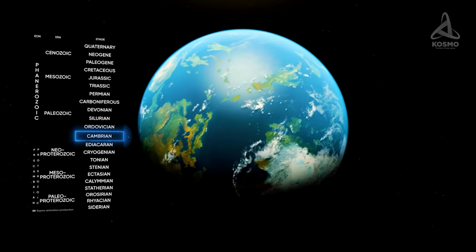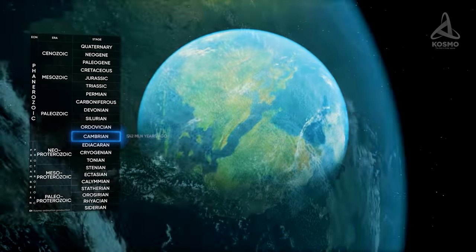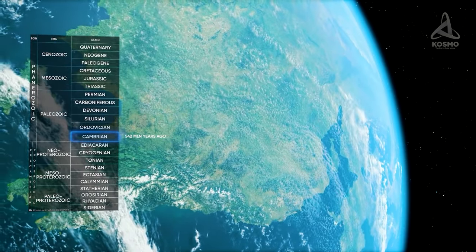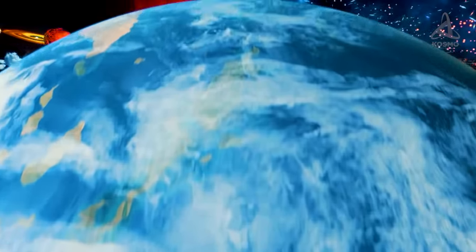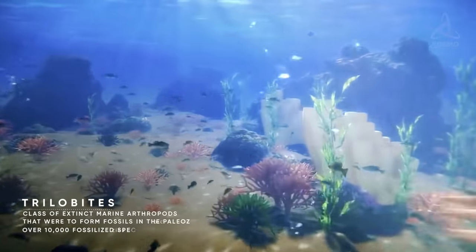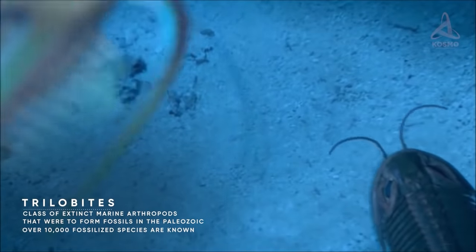The first period of the Phanerozoic Eon is called Cambrian. It started 542 million years ago and continued for about 56 million years. Trilobites are the most well known and widespread creatures of the time, although these creepy things are not the only ones the Cambrian is notable for.